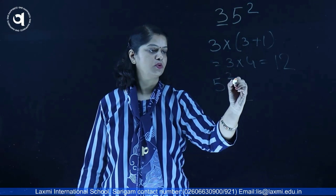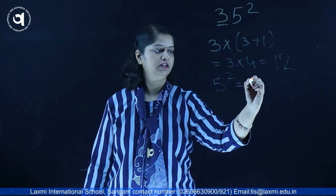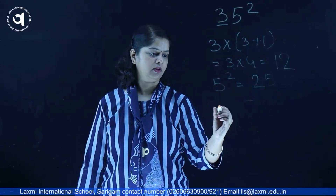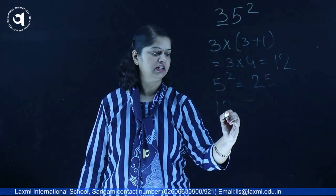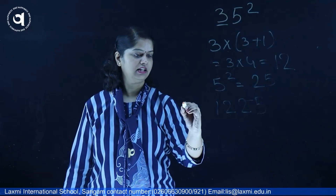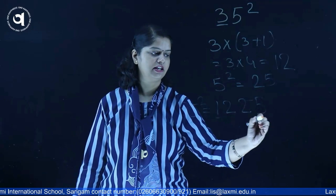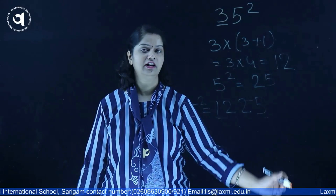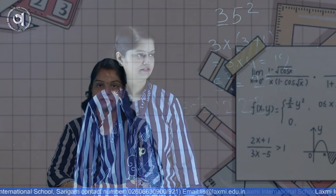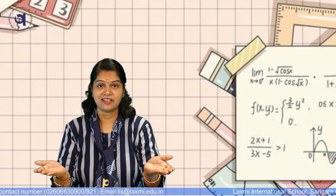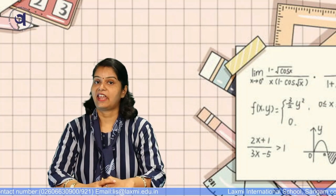And again, the square of 5 will be 25. Now let us take both the numbers together. So the square of 35 is 1,225. Isn't it so easy? So can you find now the square of 75? I am waiting for your answers in the comment section.